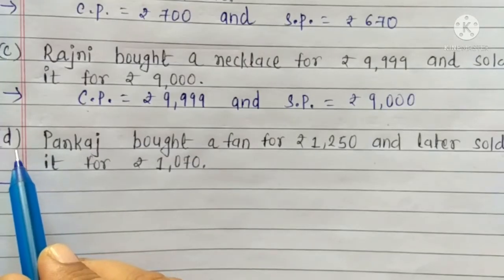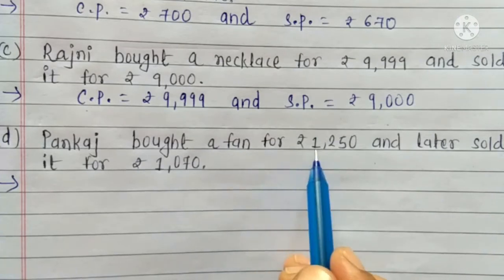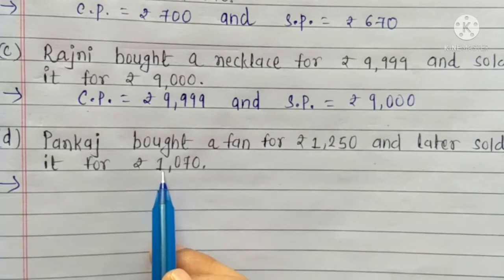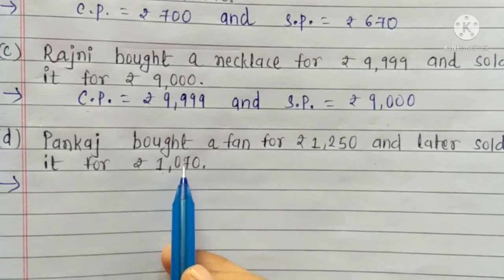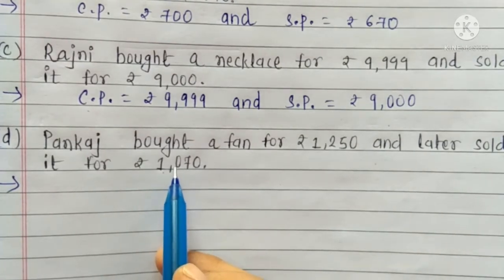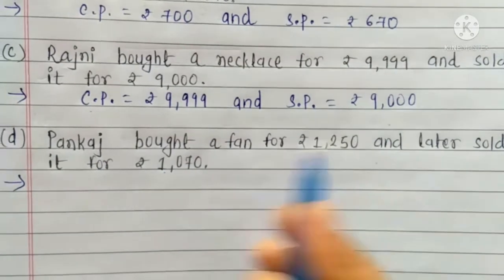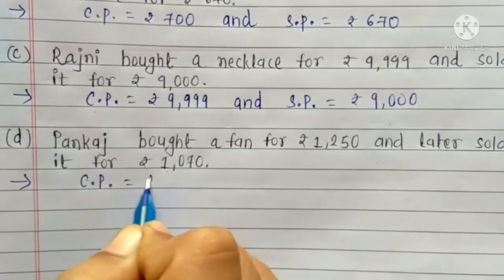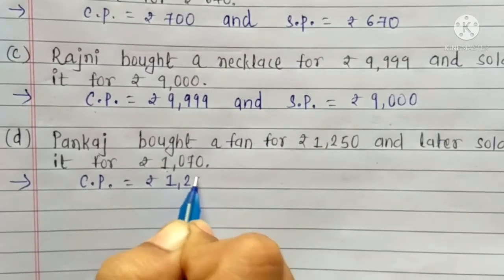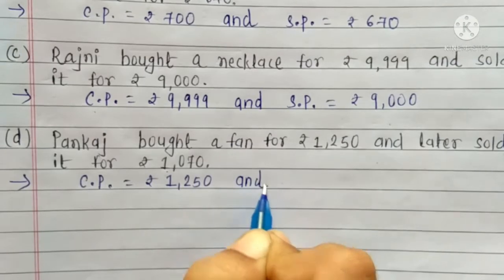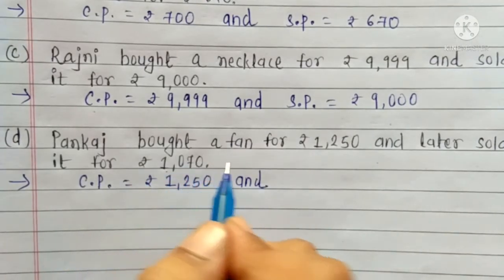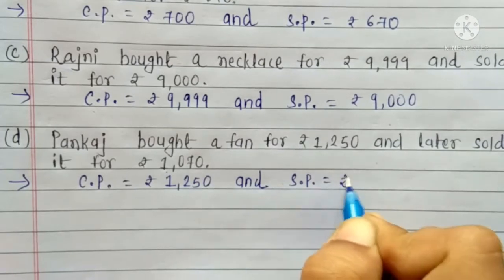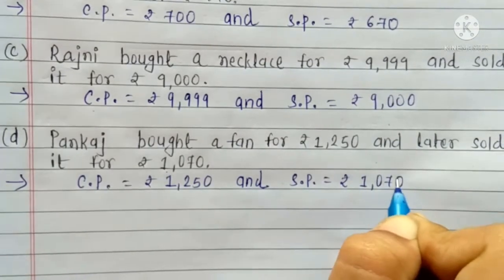D. Pankaj bought a fan for Rs. 1250 and later sold it for Rs. 1070. That means, Pankaj ने fan Rs. 1250 में purchase किया है. So, Cost Price है Rs. 1250. And Rs. 1070 में sell किया है, so Selling Price is equal to Rs. 1070.